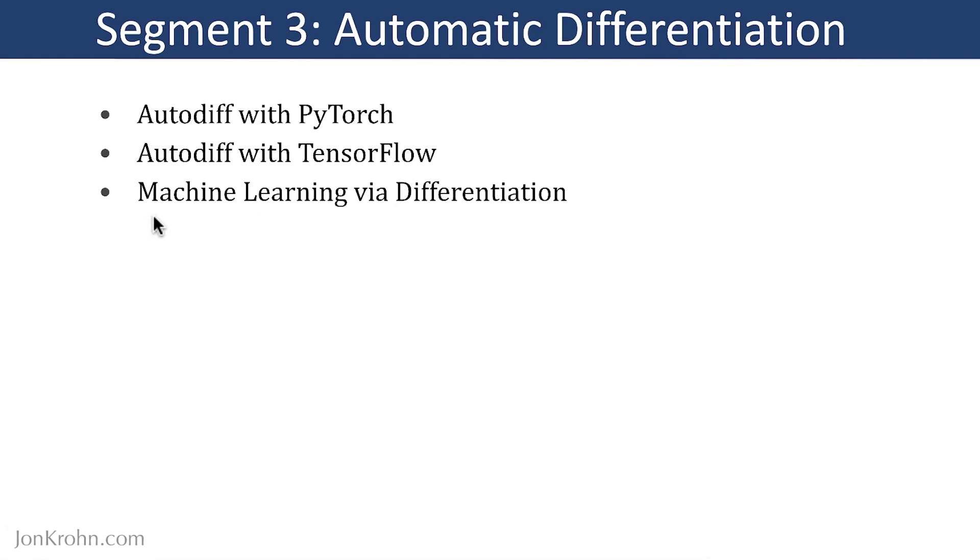More specifically, in this segment three on Automatic Differentiation, we'll cover Automatic Differentiation in the PyTorch library, as well as in the TensorFlow library. We will tackle a first example of machine learning with differentiation, and in so doing, we'll learn about cost functions, which are also known as loss functions, and are critical for evaluating the performance of a machine learning algorithm.